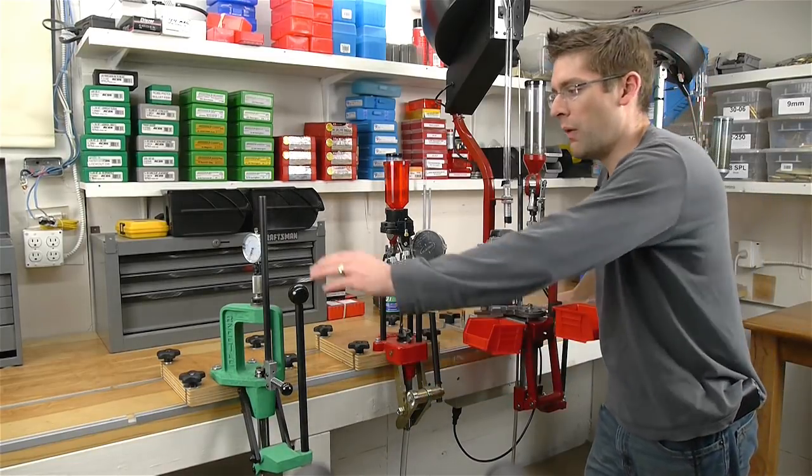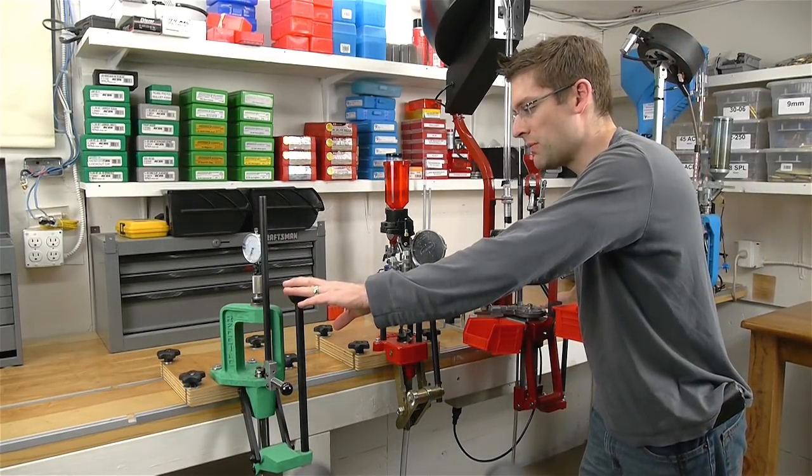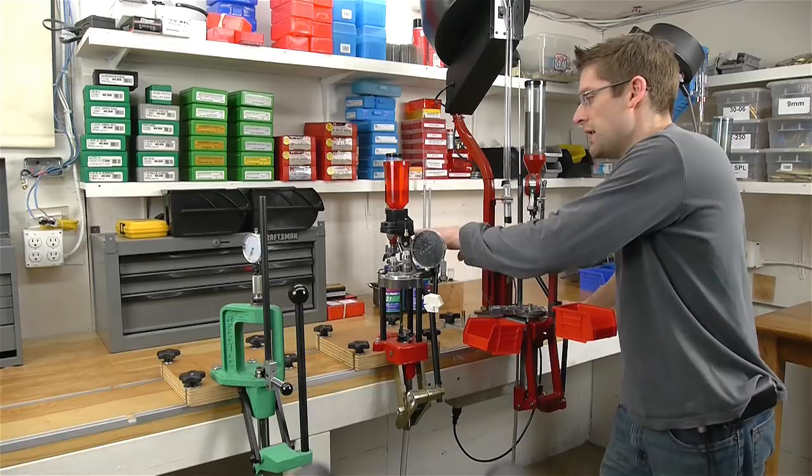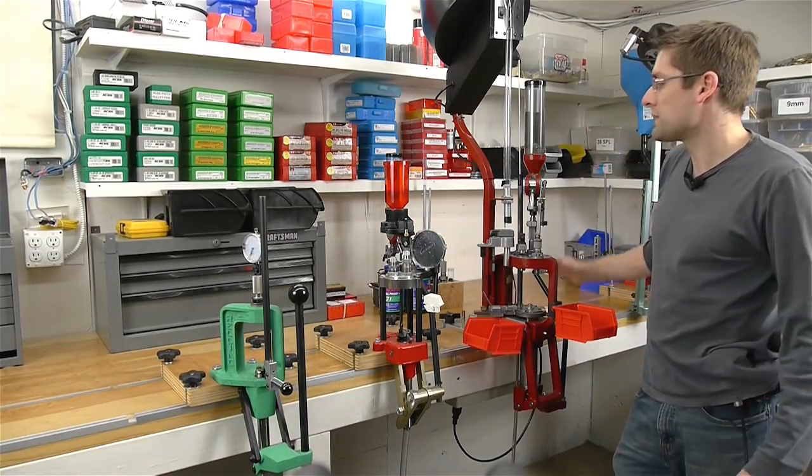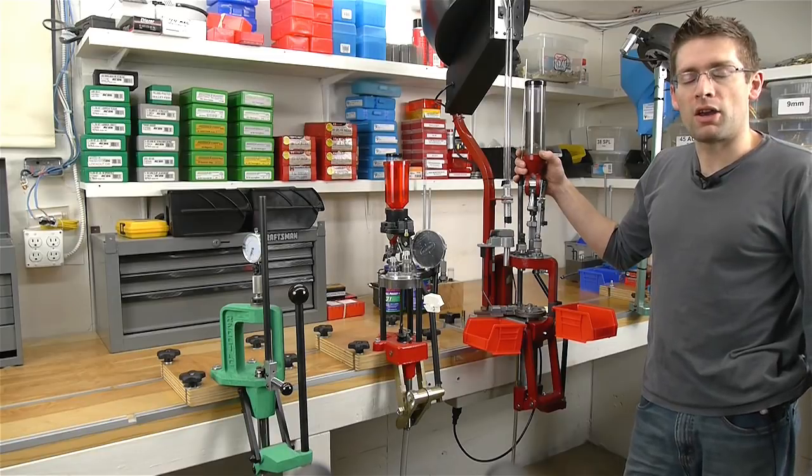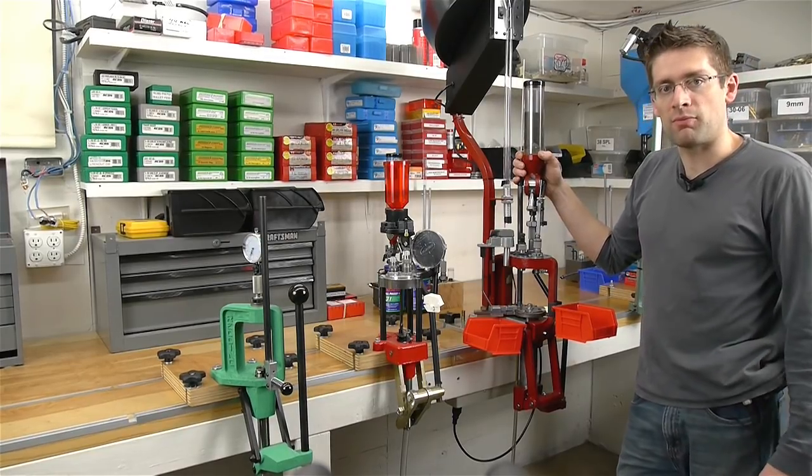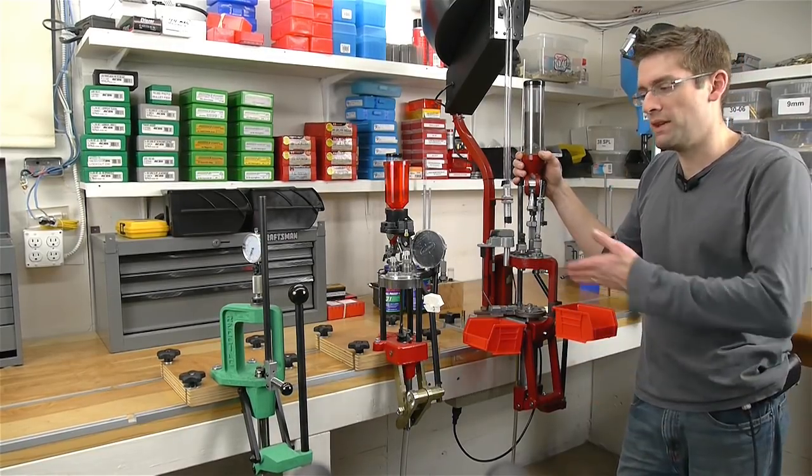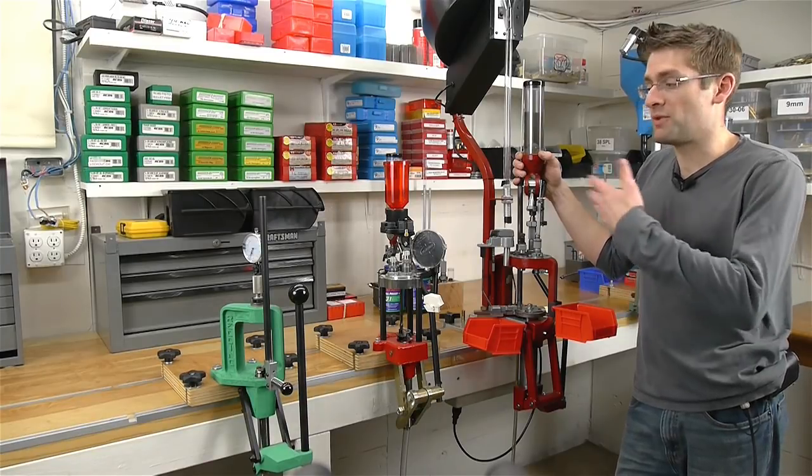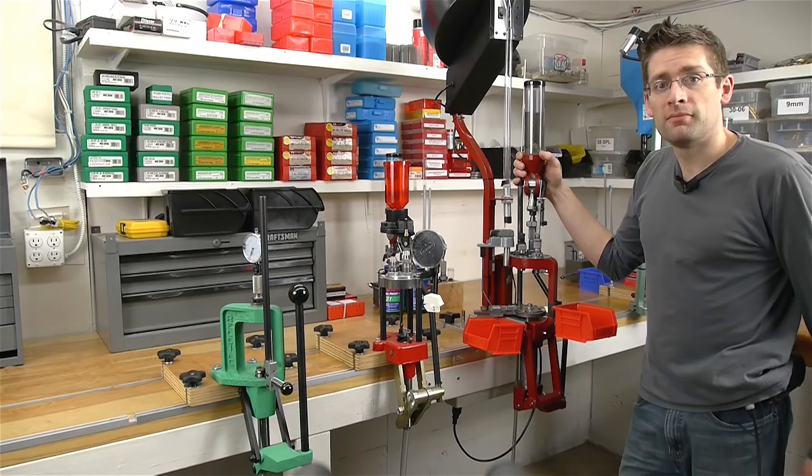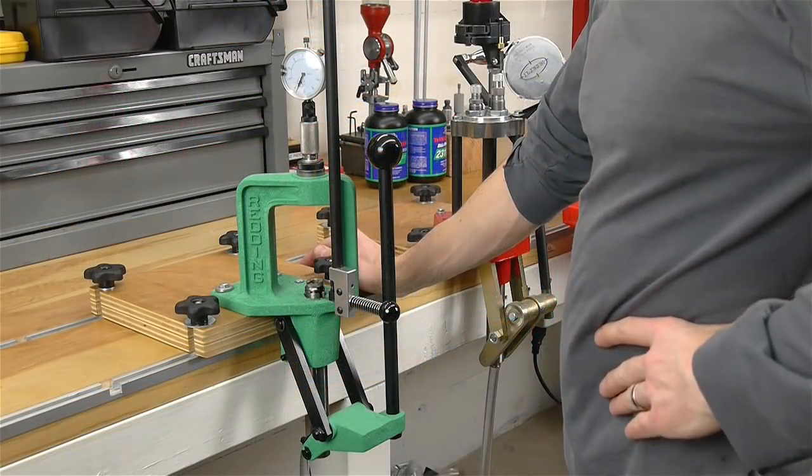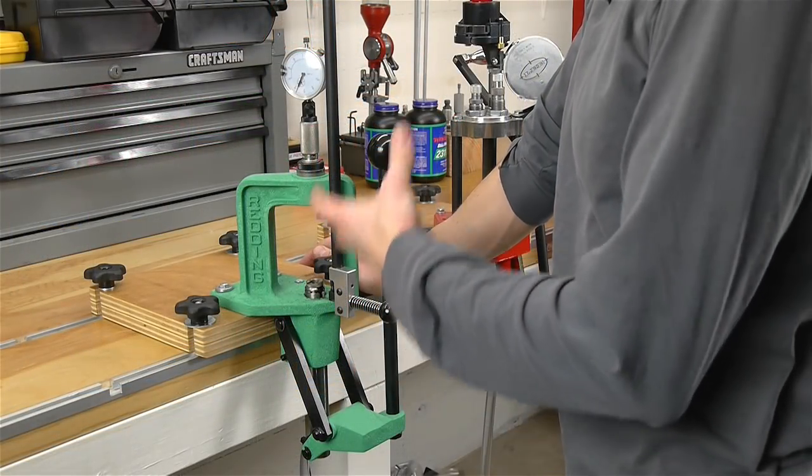Today what I'm going to do is walk through what a single-stage reloading press looks like, what a turret reloading press looks like and how it works, and also an auto-indexing progressive reloading press, so that you can see what the different features are and perhaps what the right type of press would be for you to start out with. Let's start with the type of press that's most simple, which is called a single-stage reloading press.